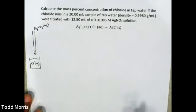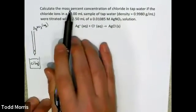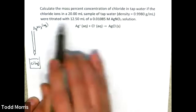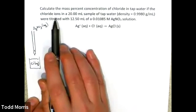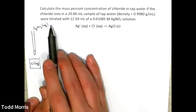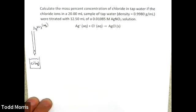Let's do one more example of the kinds of calculations that you'll need to do for this week's lab. In this case, we're going to calculate the mass percent concentration of chloride in tap water, given that the chloride ions in a 20-milliliter sample of tap water were titrated with 12.5 milliliters of a 0.01085 molar solution of silver nitrate.